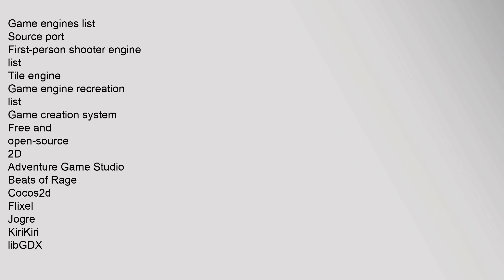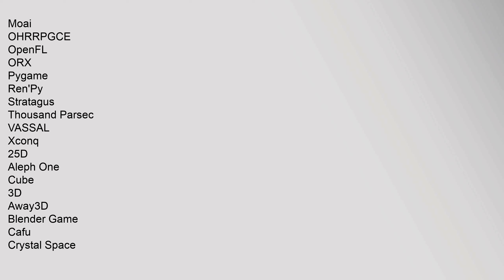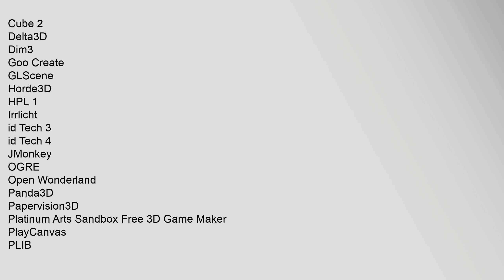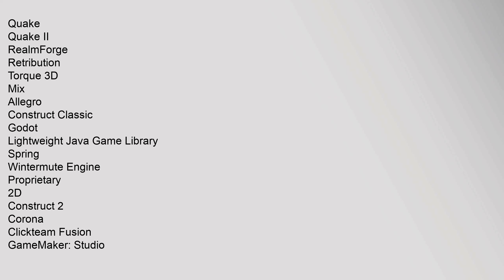Related lists include: game engines list, source port, first-person shooter engine list, tile engine, game engine recreation list, game creation system. Free and open source: 2D — Adventure Game Studio, Beats of Rage, Cocos2D, Flixel, Jogger, KirikiriZ, libGDX, Moai, OHRRPGCE, Open Florx, Pi Game, Ren'Py, Strategus, Thousand Parsec, Vassal, XConq. 2.5D — Aleph One, Cube. 3D — Away3D, Blender Game, Cafu, Crystal Space, Cube 2, Delta3D, DIM3, Goo Create, Glycine, Horde3D, HPL1, id Tech 3.